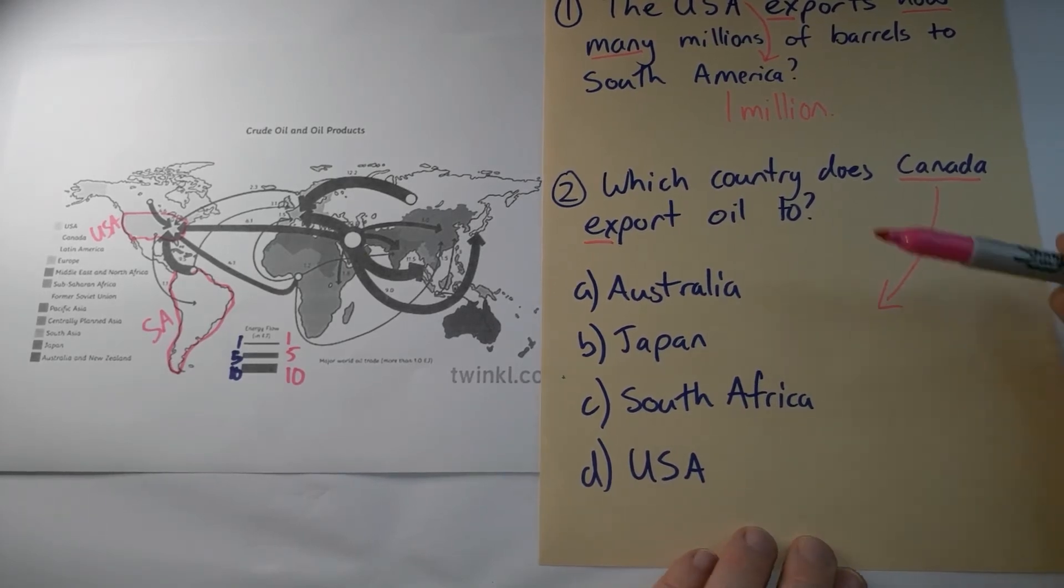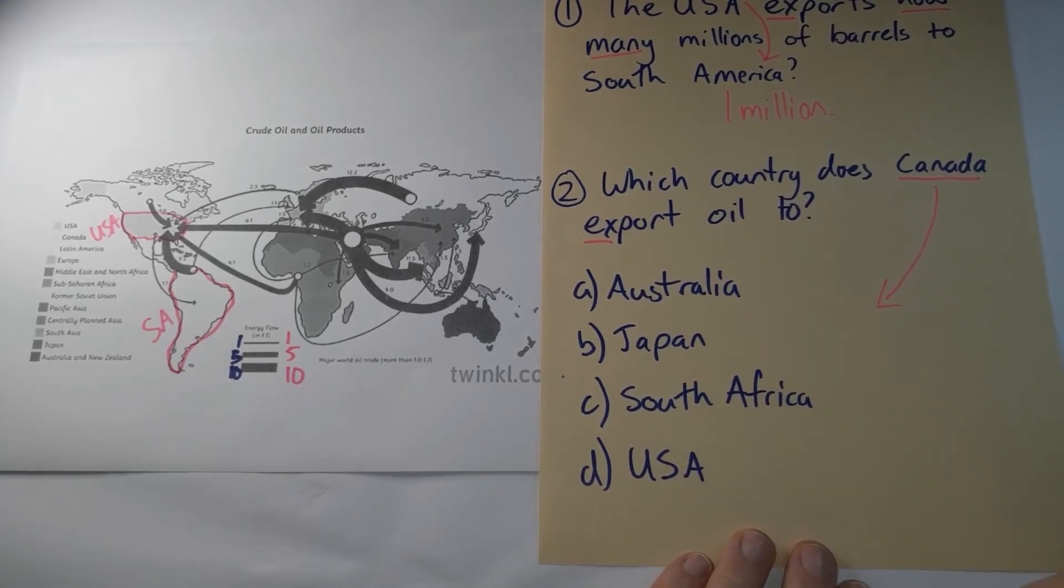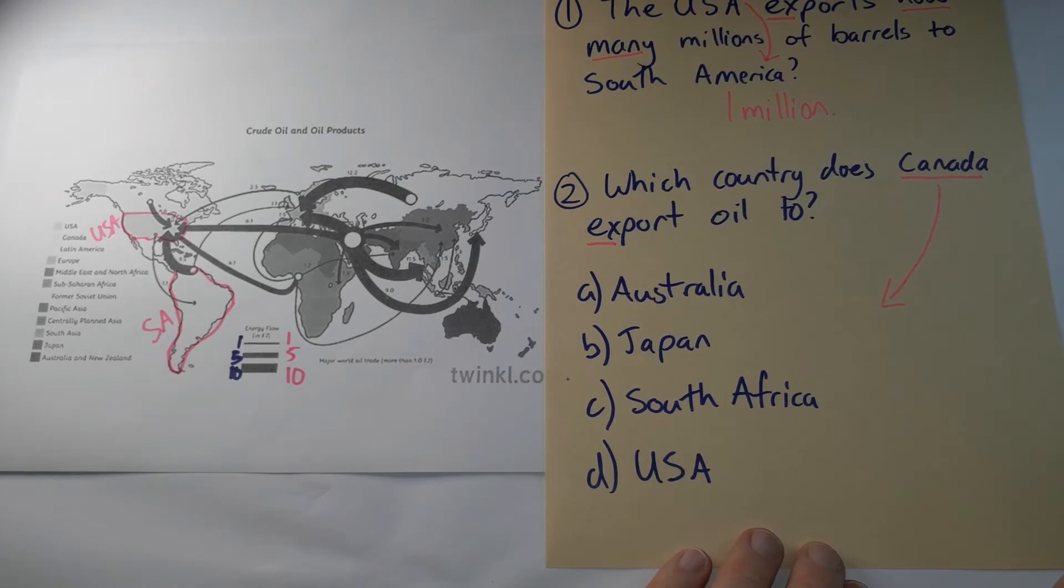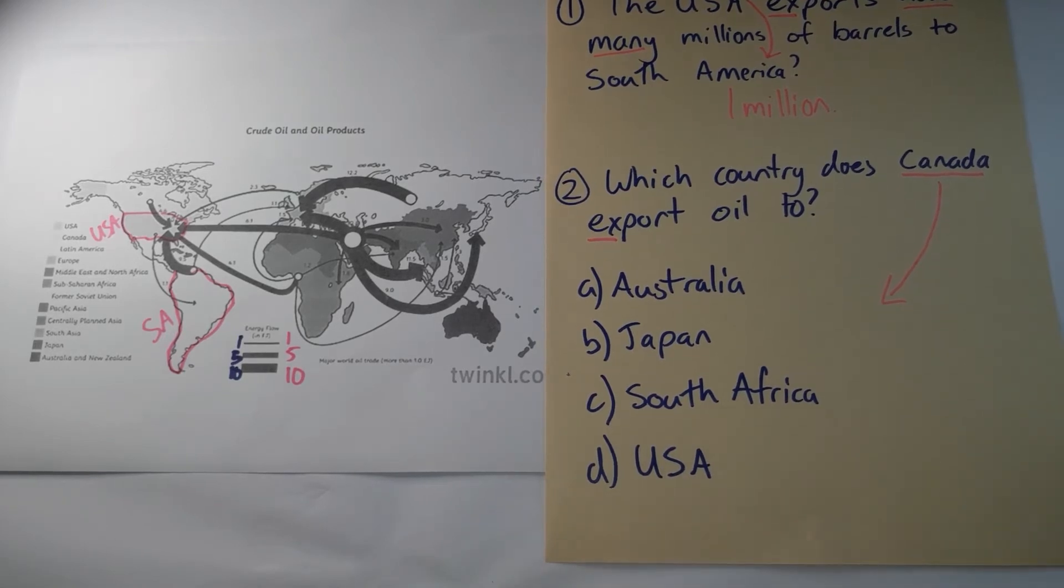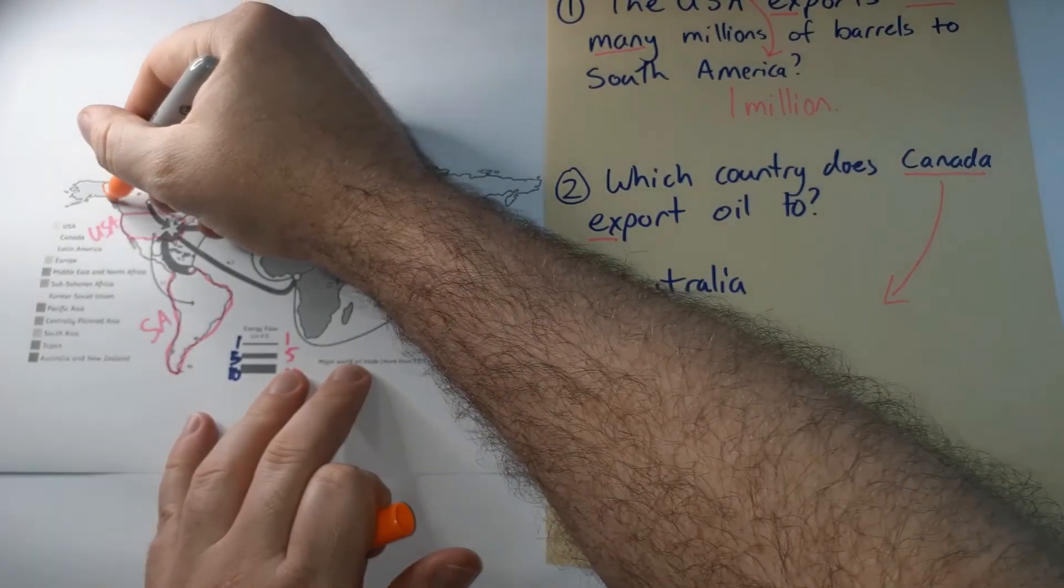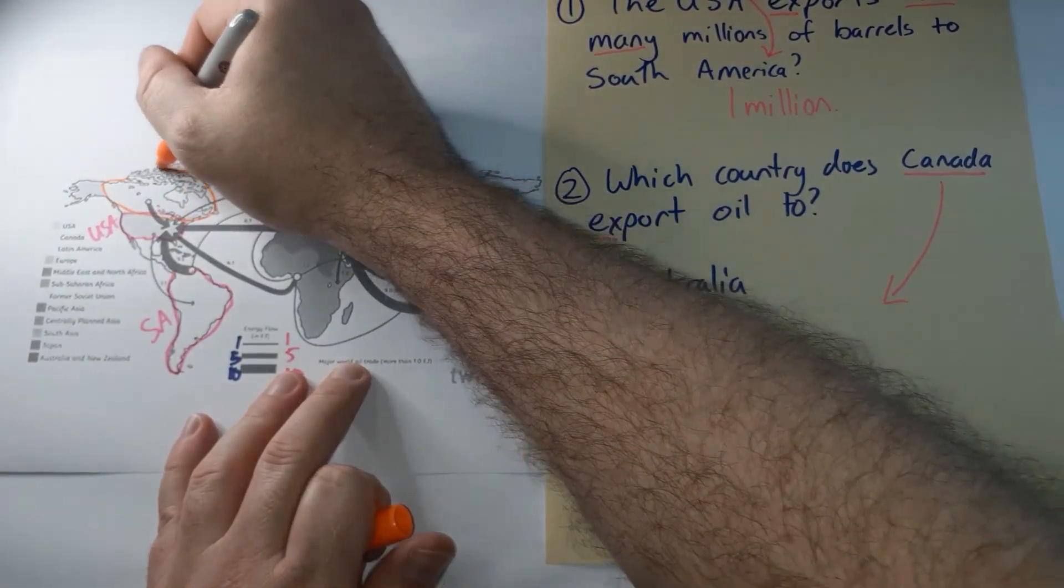Remember in multiple choice we're looking for either the most correct answer where the other three have to have something clearly wrong with them. So let's have a look. Where is Canada? I'm just going to grab a different color for our second question and I'm going to outline very poorly Canada.